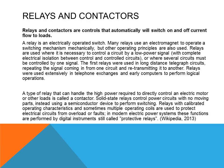Relays and contactors are controls used to turn motors on and off. A relay is an electrically operated switch. Many relays use an electric magnet, sometimes called a coil, which takes electrical energy and converts it into magnetism. This magnetism pulls in a plunger to cause mechanical action. Relays are devices used to stop or control the flow of current. There are many different types, including solid state or electronic relays that have no mechanical action.